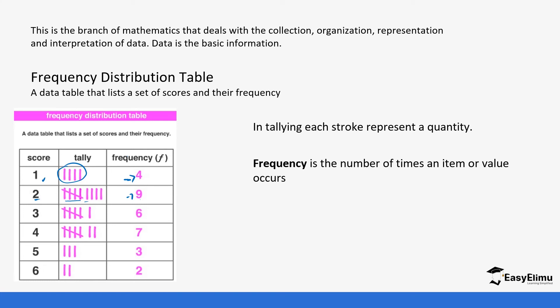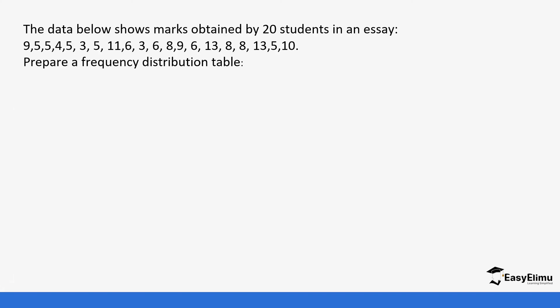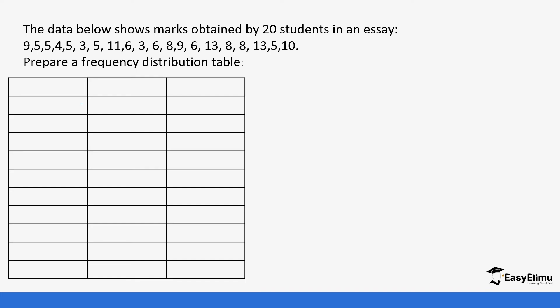Let's look at an example. We have been given a set of data for 20 students, and we are going to prepare a frequency distribution table for this data. We are going to have the marks column, then the tally column, and then the frequency column.